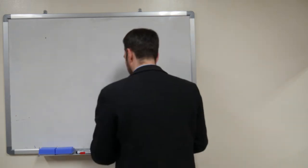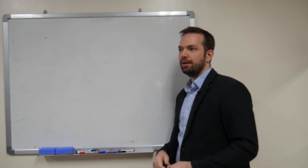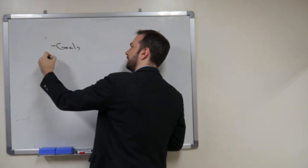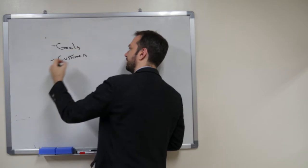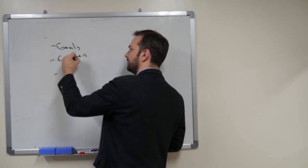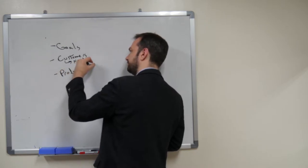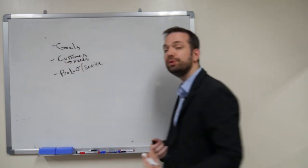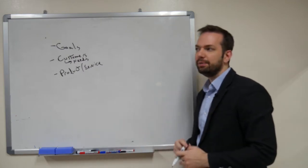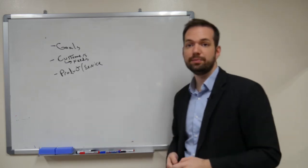I want you to think about the business plan that you created before. Whenever you're making your business plan, what were the goals you were trying to achieve? Who are your customers, and what are their needs? What product or service do you have, and what value are you giving to your customers? Once we've established those — the business plan — we can start to think about what kind of business information systems and technology we need to support this business plan.